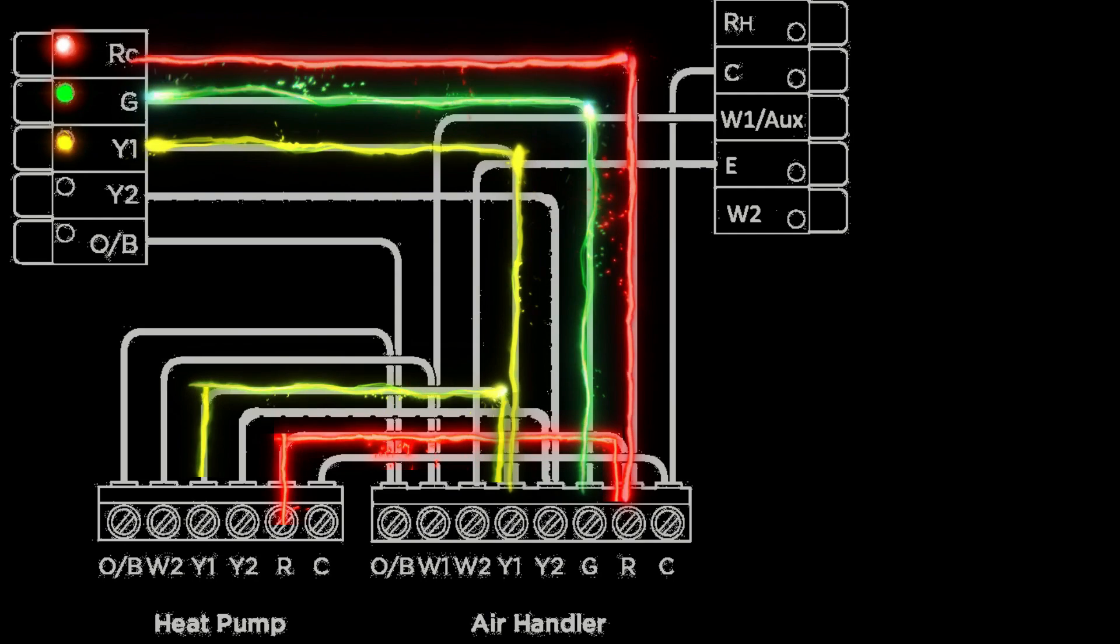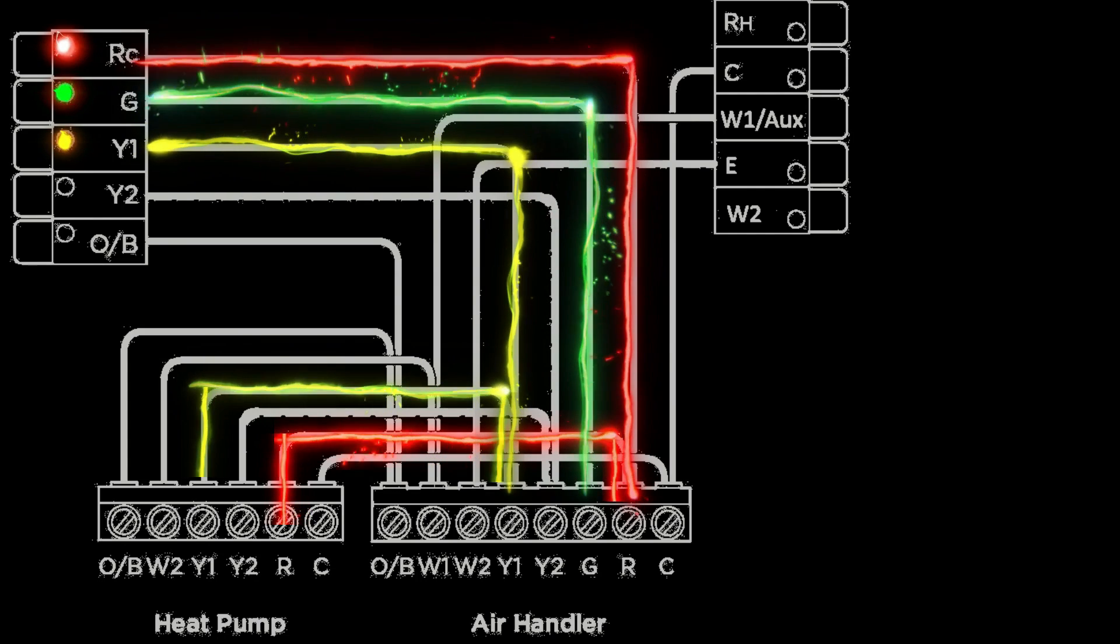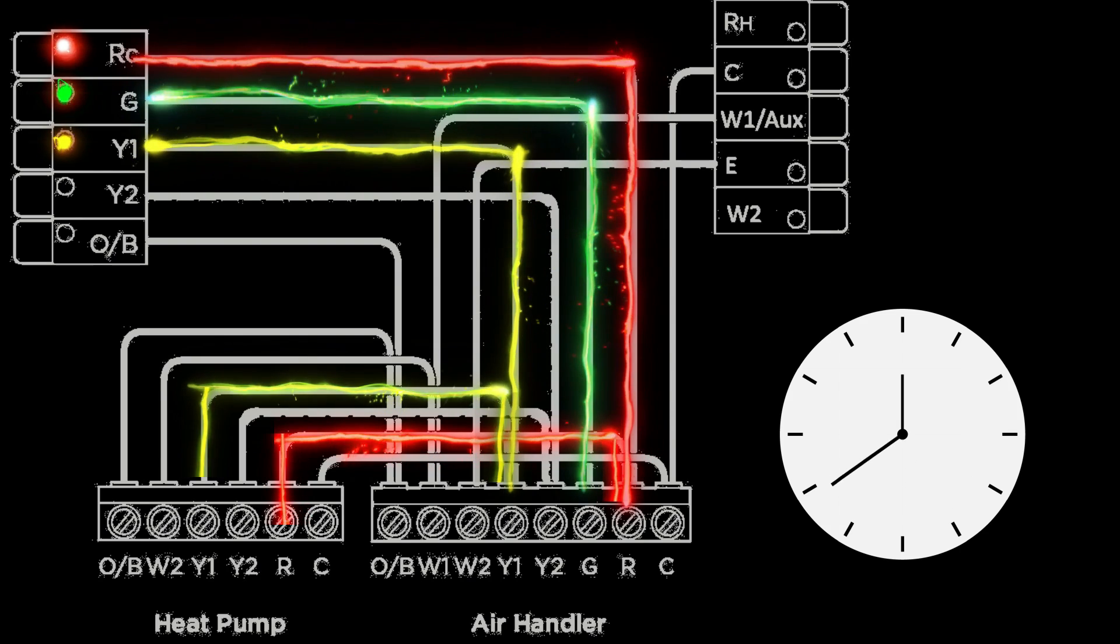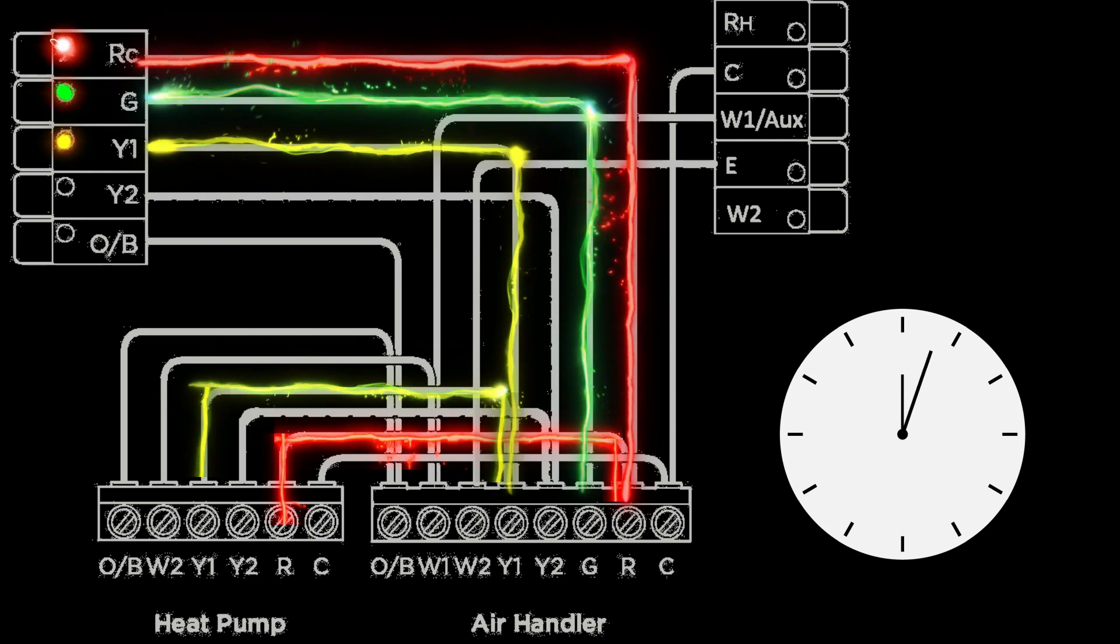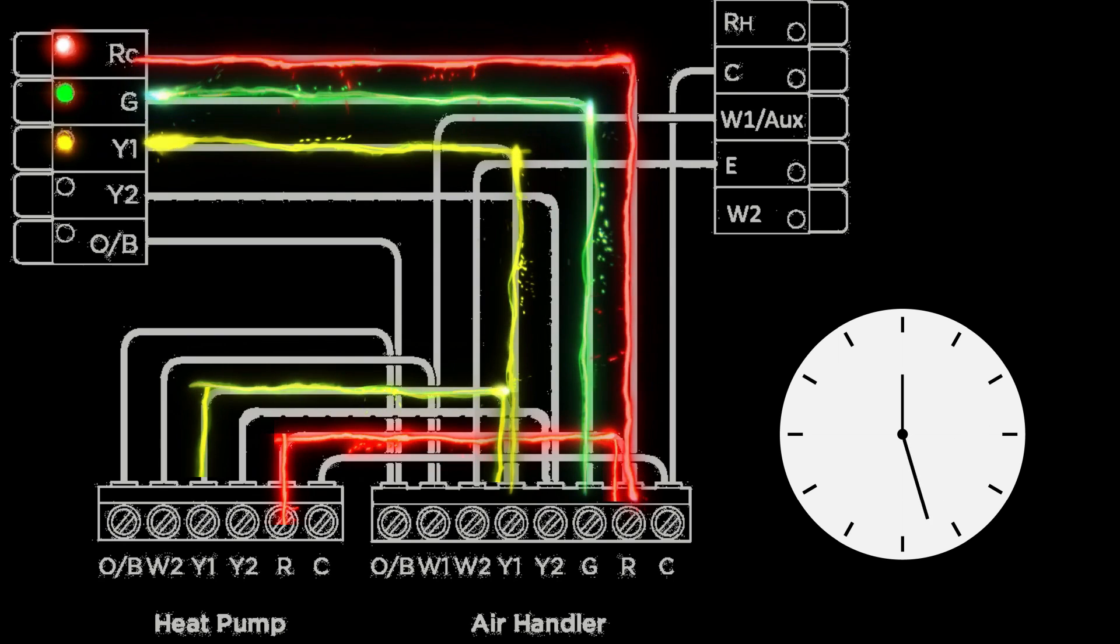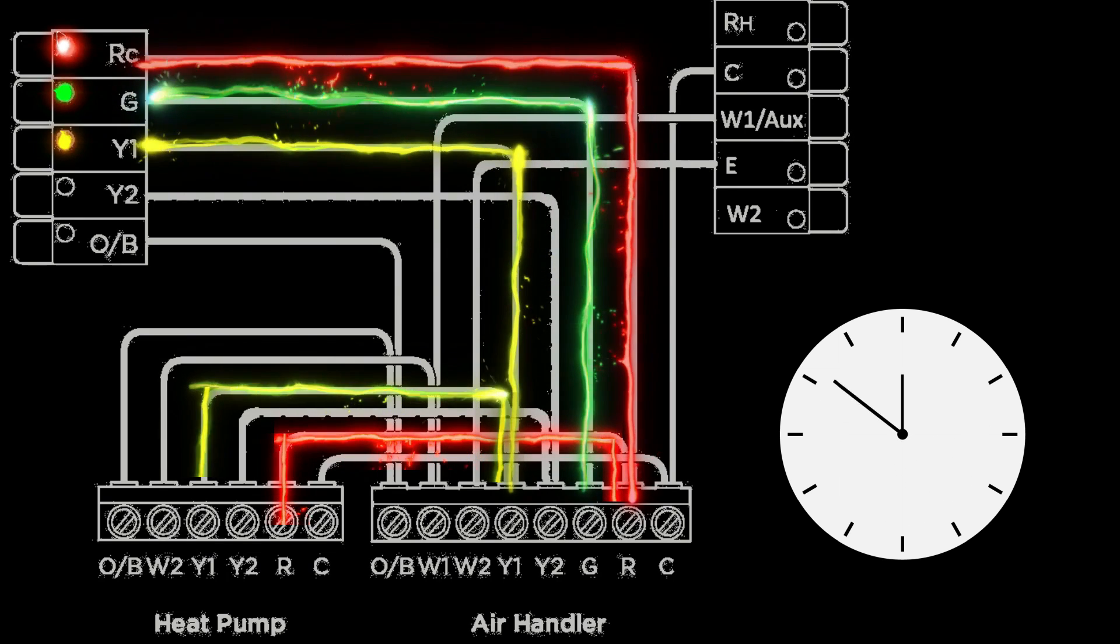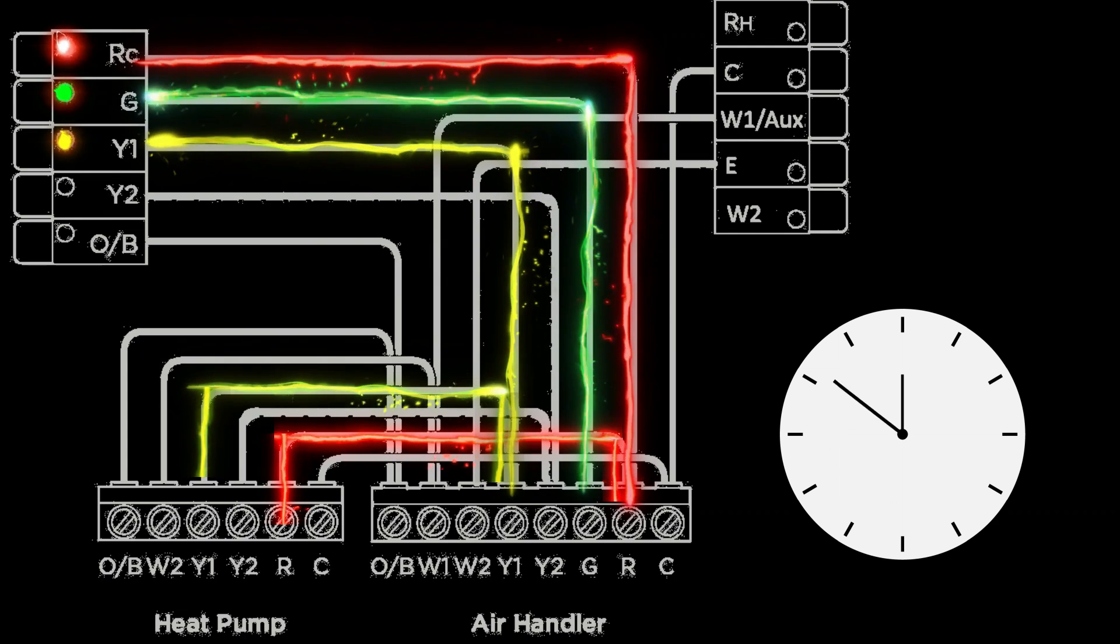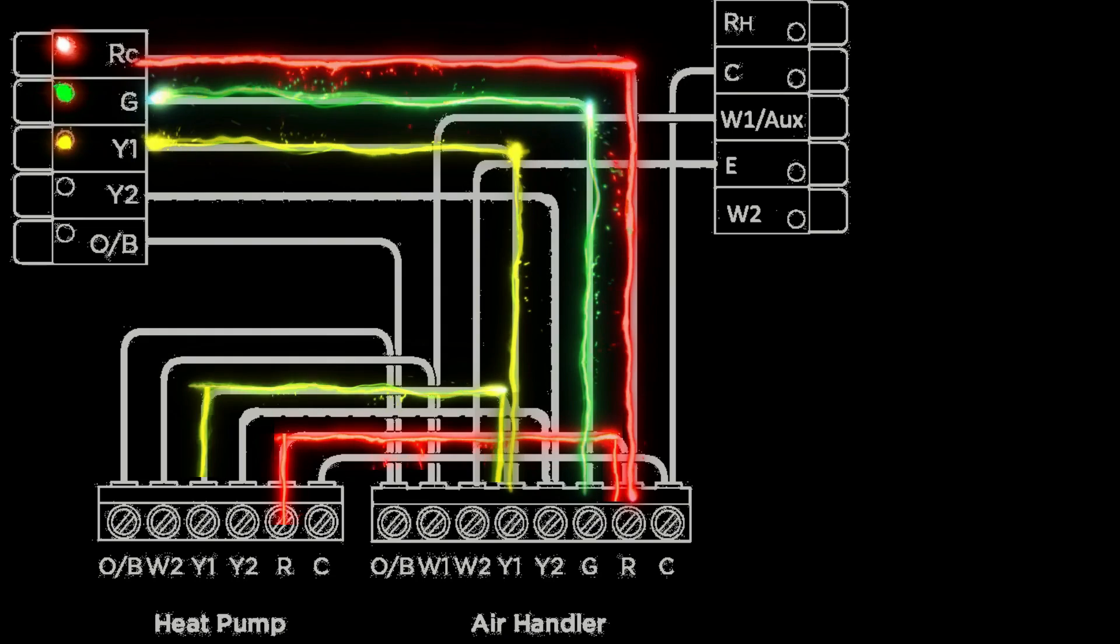Other thermostats actually use a timer, so if the temperature of the room is not changing after a certain time period the thermostat will then activate second stage to give it that extra boost. Now some thermostats, and this is particularly true with smart thermostats, is that they'll do a combination of both.